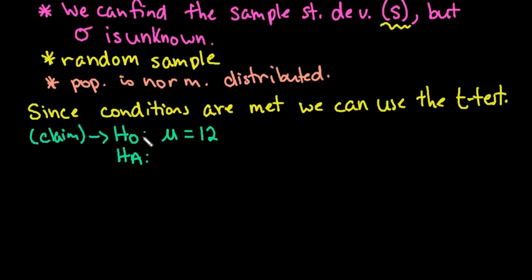Alright, so the alternative is always the opposite or the complement of this. So the opposite would be that mu is not equal to 12. So that's the alternative hypothesis. If one of these is true the other one must be false. This right here tells us that we are going to run a two tail test.